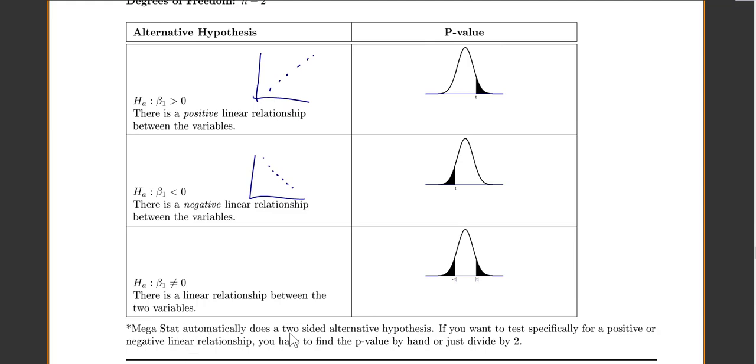Now, Megastat automatically does a two-sided alternative hypothesis. If you want to test specifically for a positive or negative relationship, you have to find the p-value by hand, or just divide it by 2. Because Megastat will always do both tails. If you want just one tail, just divide their p-value by 2.